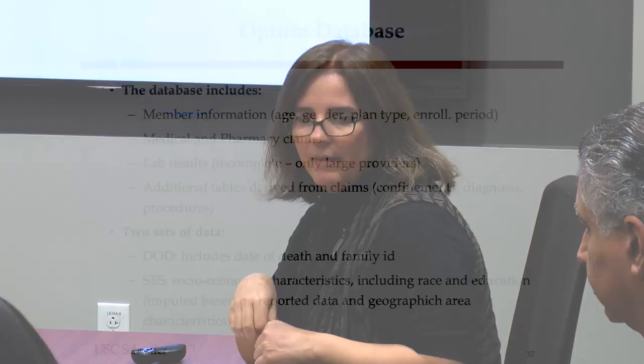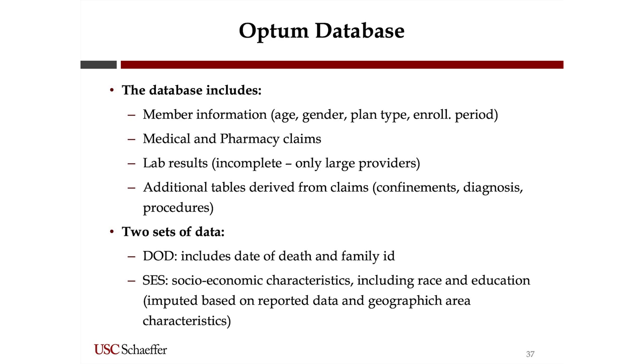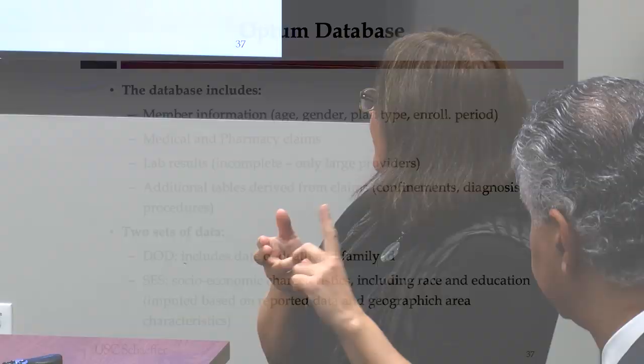We have a set of tables. Basically we have member information with age, gender, the plan type, and enrollment period as basic information. We have medical and pharmacy claims, and we have lab results, though those are incomplete — they only have data from the big labs that provide it, so we may not see all lab results and we don't know when we don't see them.